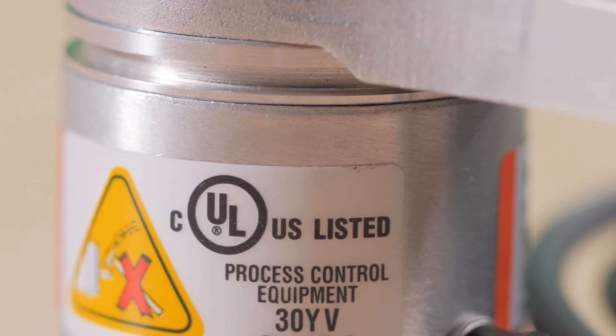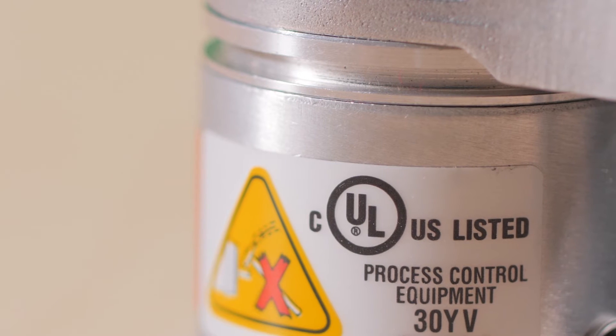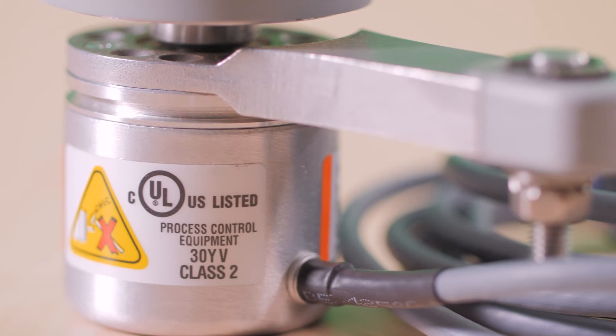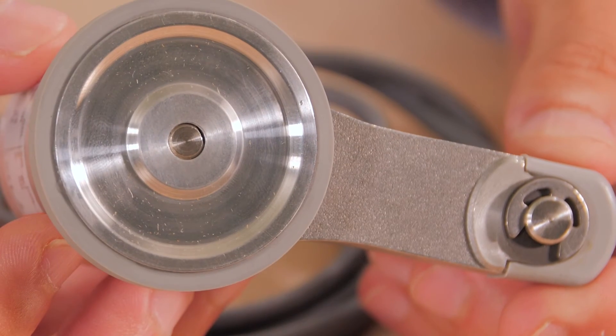This also compensates for the unevenness of the measuring surface, which could lead to faulty measurement. In addition, the integrated spring keeps the measuring wheel system robust and helps ensure a long service life.